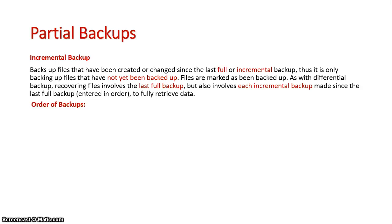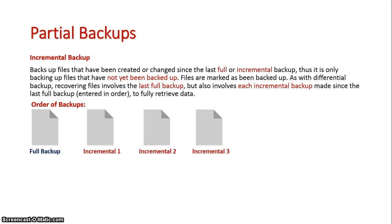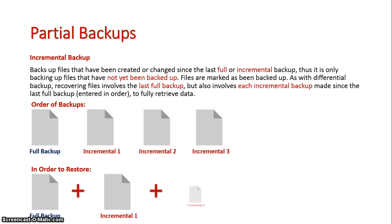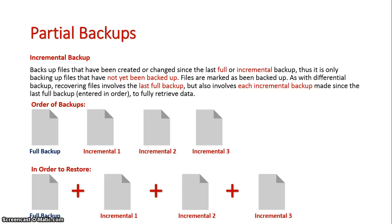So here is the order of my backups: full, incremental 1, incremental 2, and incremental 3. In order to restore everything to my system I actually need every single backup — incremental 1, incremental 2, and incremental 3. So it's important to note that these backups do get marked.